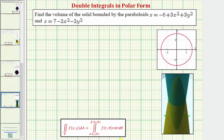Looking at this double integral in polar form, because we're trying to find the volume bounded by two functions, f of r comma theta is actually going to be the top function minus the bottom function once we find the equations in polar form. Before we do that, let's identify which function is the top and which is the bottom. Evaluating at the point (0, 0): here we'd have z equals seven, and here we'd have z equals negative six, which means this is the top function and this would be the bottom function.